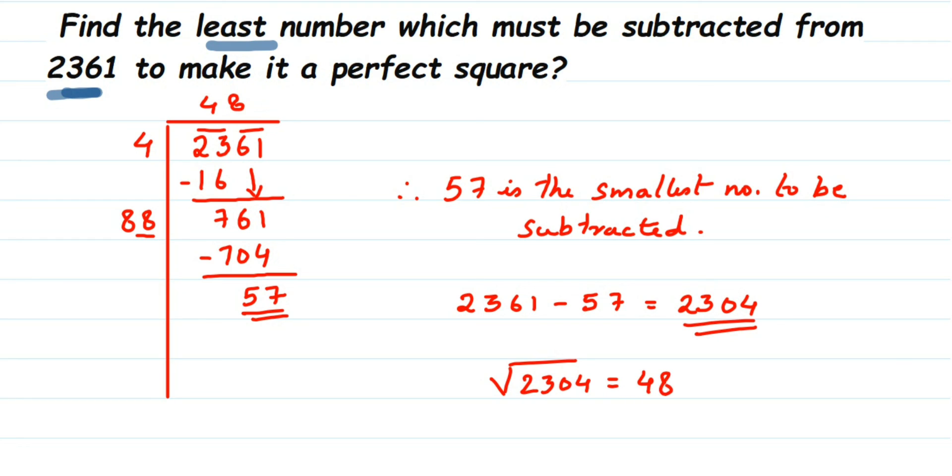This will be the answer. Whatever number you have in the quotient, that will be the square root of the number after subtracting it. So that's it. I hope this question is clear. In case you have further questions or doubts, you can drop a comment. Thank you so much for watching.